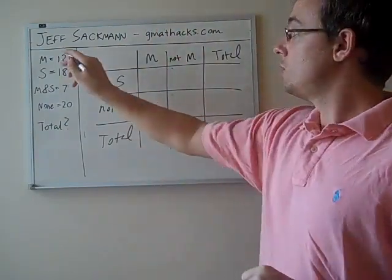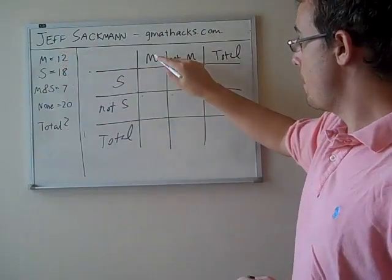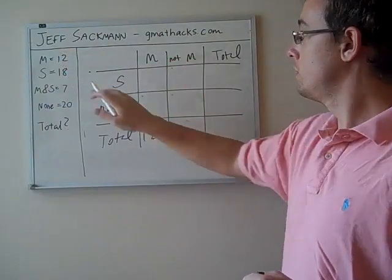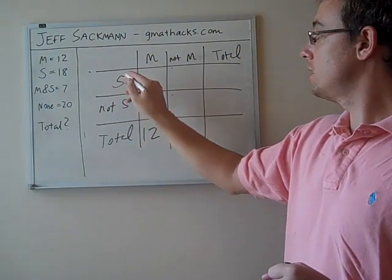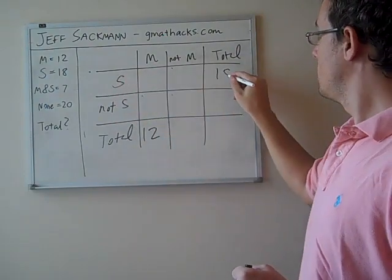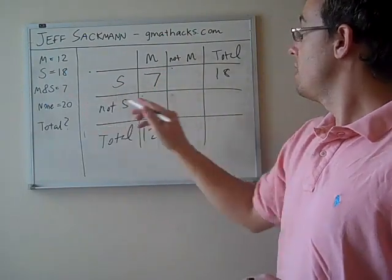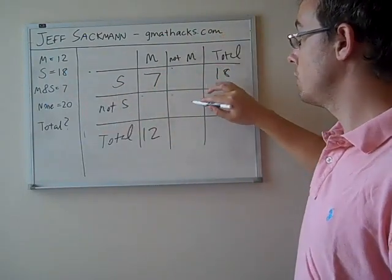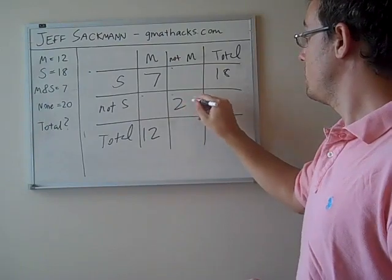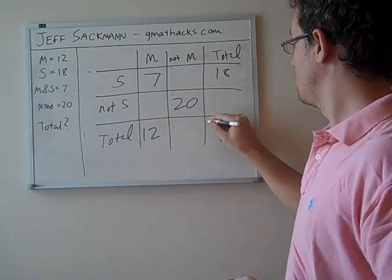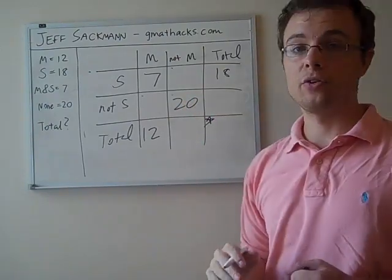So let's work this out. Total math majors is 12. Math, total, 12. Total science majors is 18. Science, total, 18. Math and science is 7. None, that's people who aren't math and aren't science. That's 20. And we're looking for the total down in the right-hand corner.